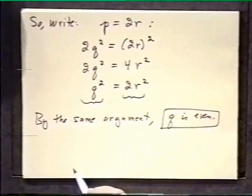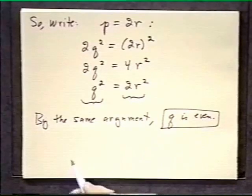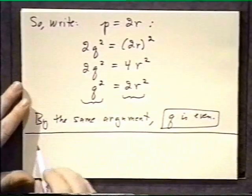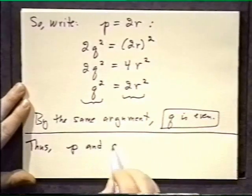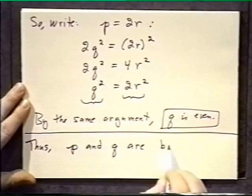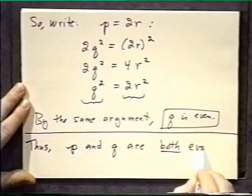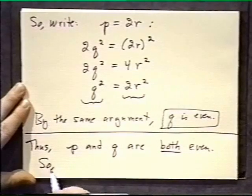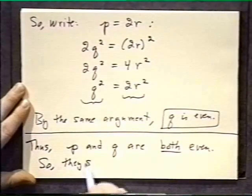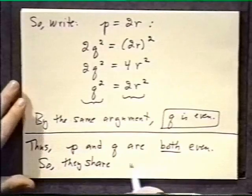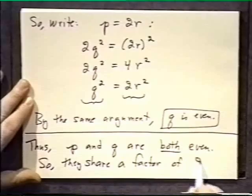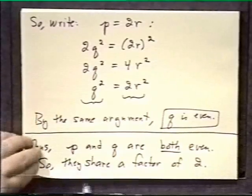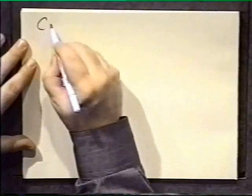So we have concluded the following, putting it all together in one place. Thus, p and q are both even numbers. So they share, among other things, they certainly share a factor of 2. But wait, that's a contradiction.